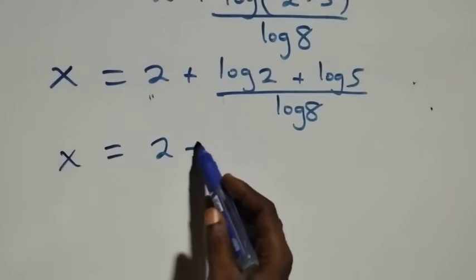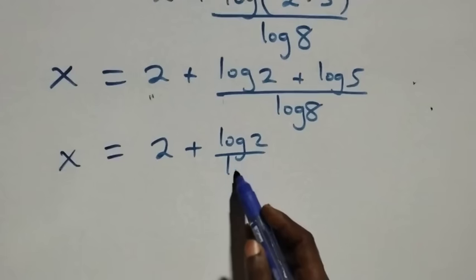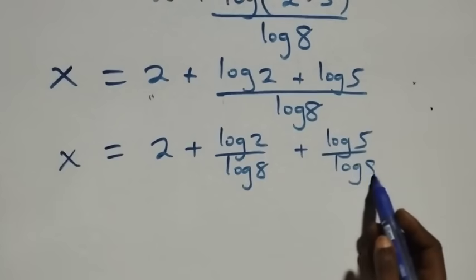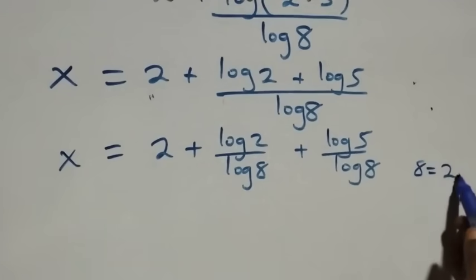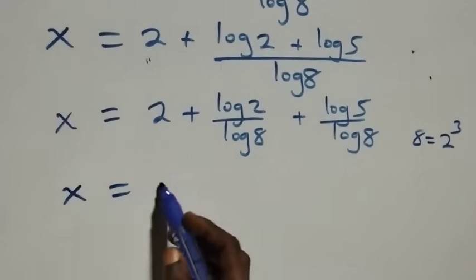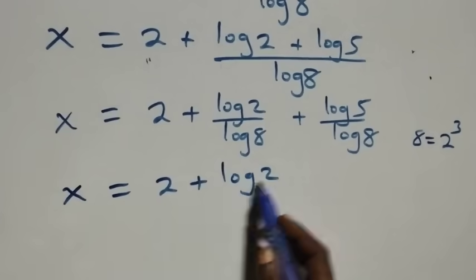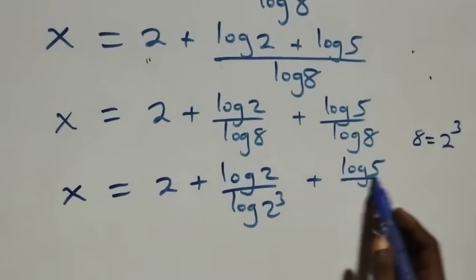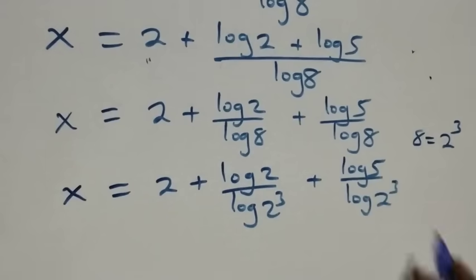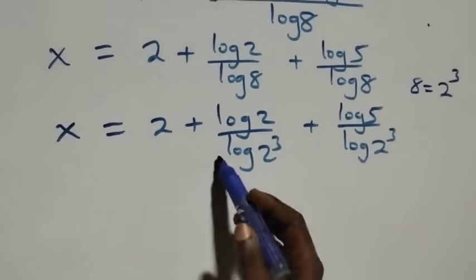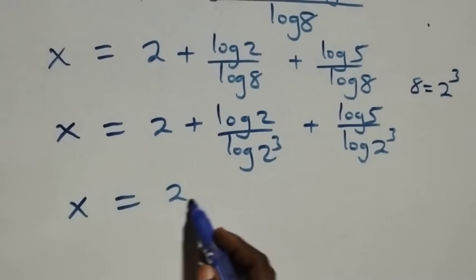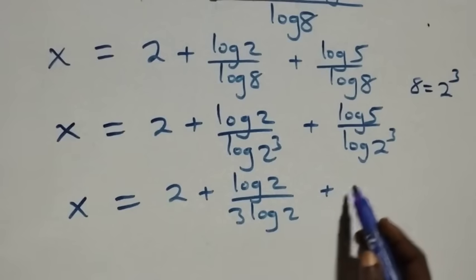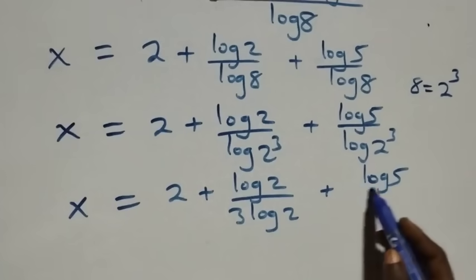So we have x equals to 2 plus log 2 over log 8 plus log 5 over log 8. Next, we can write 8 as 2 times 2 times 2, which is 2 raised to power 3. So x equals to 2 plus log 2 over log 2 raised to power 3, plus log 5 over log 2 raised to power 3. Applying the power law of logarithm, 3 comes down, giving log 2 over 3 log 2 plus log 5 over 3 log 2.